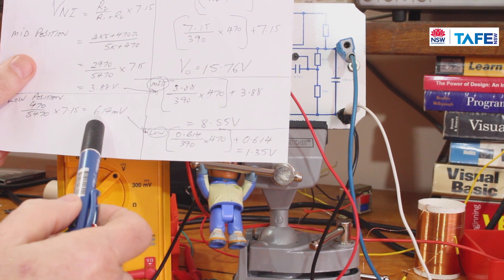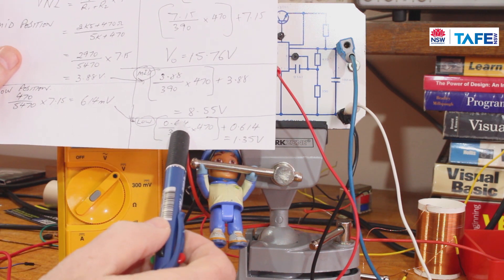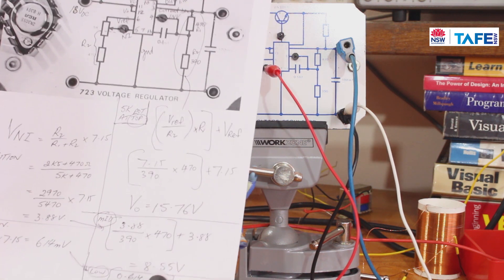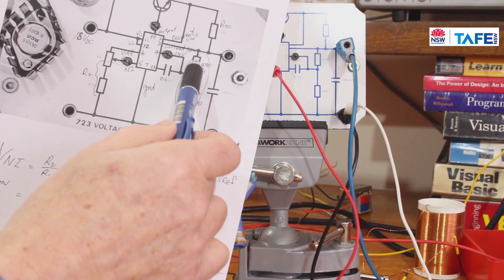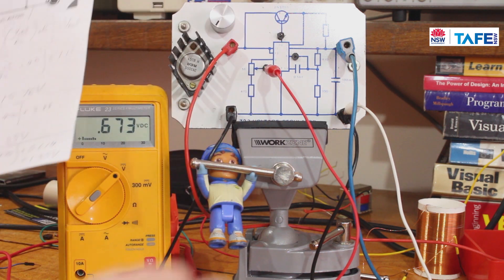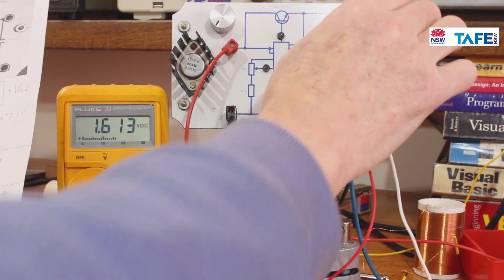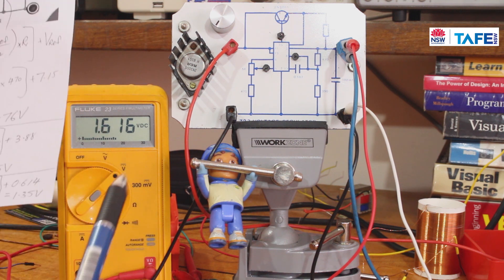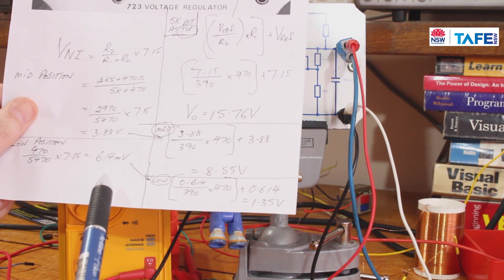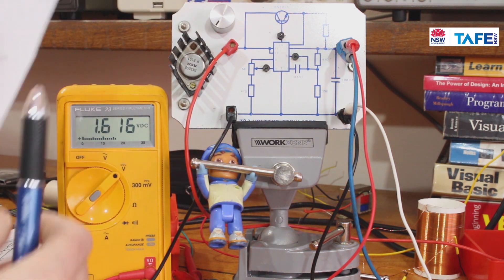The last bit of the maths here I've got, and I based it on the 614 millivolts. If I went 614 divided by the 390 ohm resistor, multiplied it by the 470, added to the 614 millivolts: 1.35 volts. Let's see what we actually got on the output.